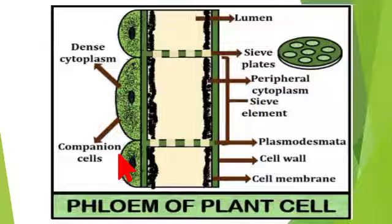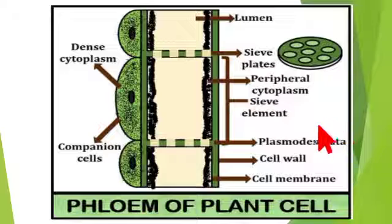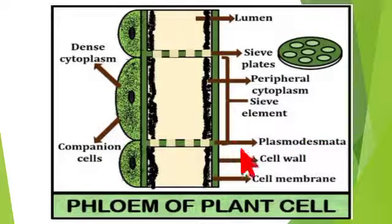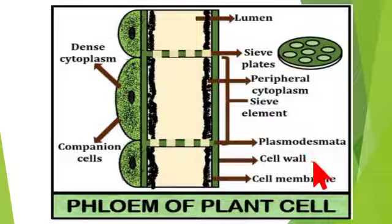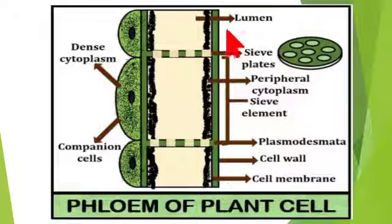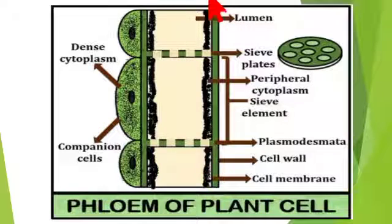Phloem also consists of a lumen, which is an empty space. Plasmodesmata are cytoplasmic strands that link the sieve tube and the companion cells. By means of plasmodesmata, sieve tube and companion cells are connected.